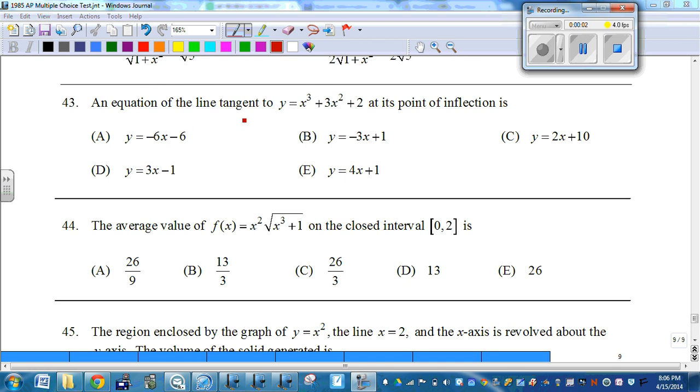43, an equation of a line tangent to y equals x cubed plus 3x squared plus 2 at its inflection point. So first we're going to need to figure out the inflection point because we're writing an equation of a tangent line, which means we need a point and a slope.